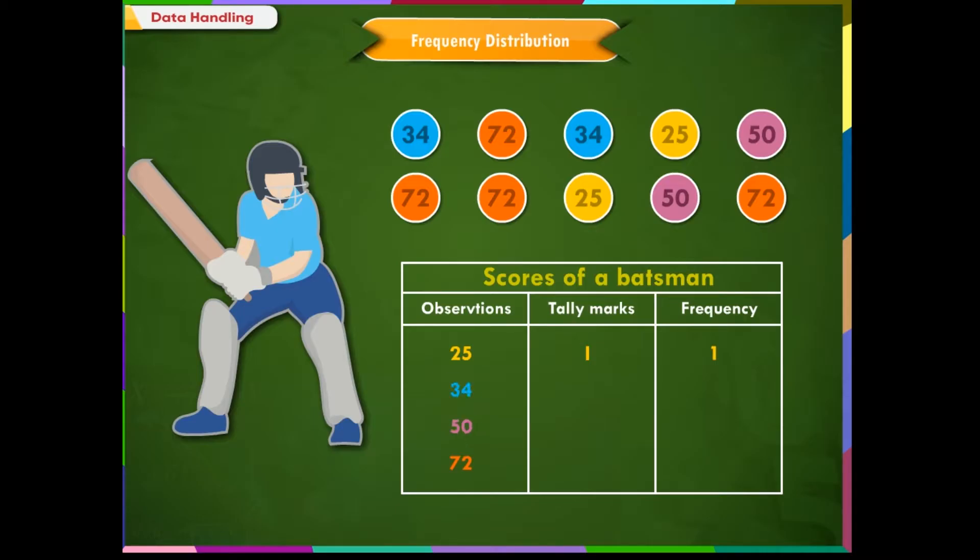34 and 50 are appearing two times. Therefore, put two marks each here. Frequency will become two for each. The number 72 is occurring five times, so we put five marks here and write five in the frequency column.